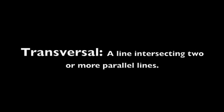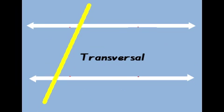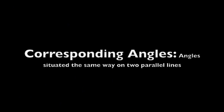You also need to know what a transversal is. It's just a line that intersects two or more parallel lines. So if we take that transversal and the parallel lines it's intersecting, it creates angles.